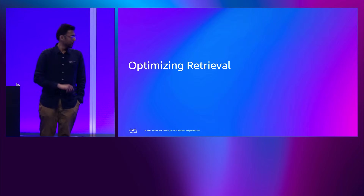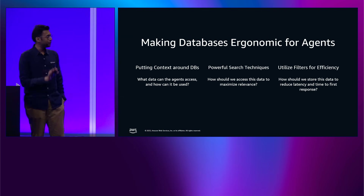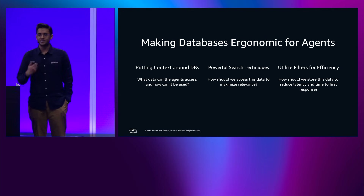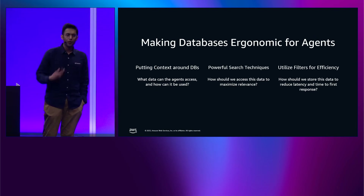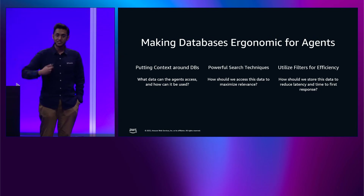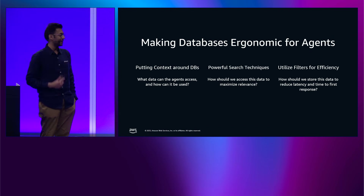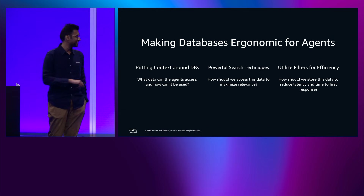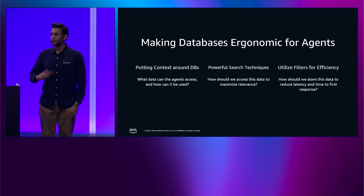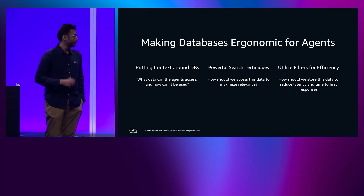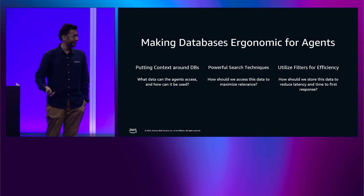What about retrieval? In order for agents to work well with databases, you need to make the databases ergonomic for those agents. The number one mistake I see developers make is linking their database to their agents without properly informing them — passing schemas back to the agents on what information is actually contained in that database. So you need to ask: what data can the agents access, how can it be used, and how should the agent use that information? Second is implementing powerful search techniques. And we should be using filters as much as we can to reduce the search space and decrease latency.